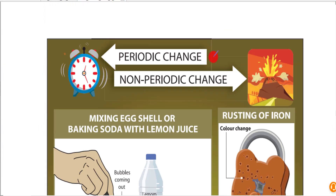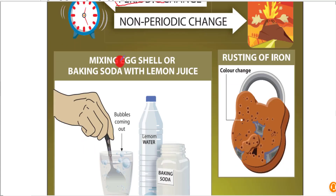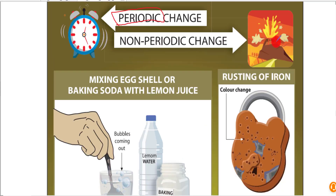Next is periodic change and non-periodic change. A periodic change has a rhythm or pattern - it repeats at regular time intervals. A non-periodic change does not follow a set pattern or time interval. If the time interval is fixed and regular, it is a periodic reaction. If the time interval varies randomly, it is a non-periodic reaction.